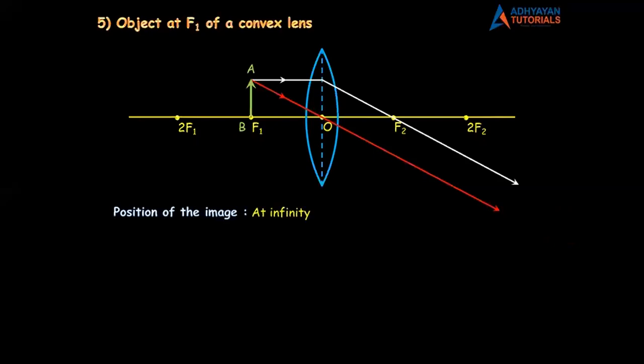I repeat what I have done. In the first diagram, the object was at infinity, so rays came parallel. In this diagram, rays are going parallel. So where will the image be? The image will be at infinity. So the position of the image is at infinity.